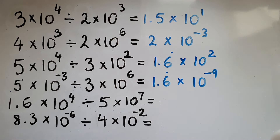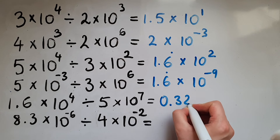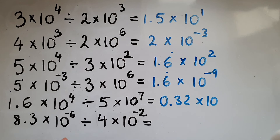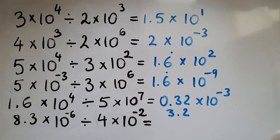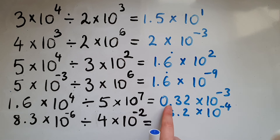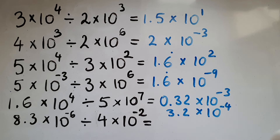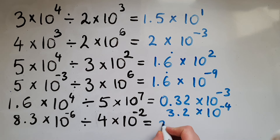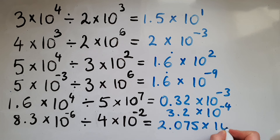1.6 divided by 5 gives us 0.32 times 10 to the power of 4 take away 7 is negative 3. But don't forget, we can't leave it like that — we've got to convert it to 3.2 times 10 to the power of negative 4, because the decimal point being here means four steps to the left to get to the actual number, so that's why negative 4.